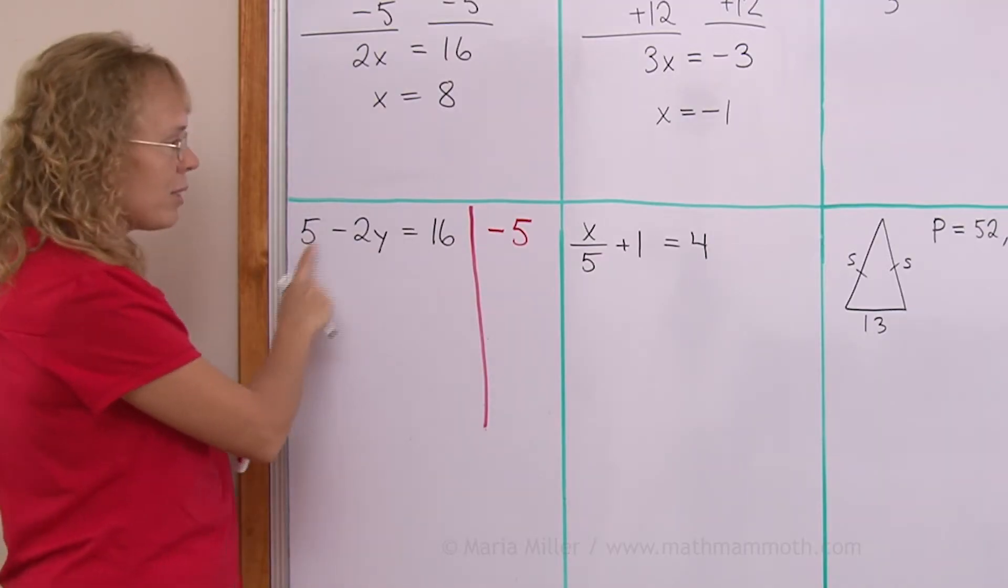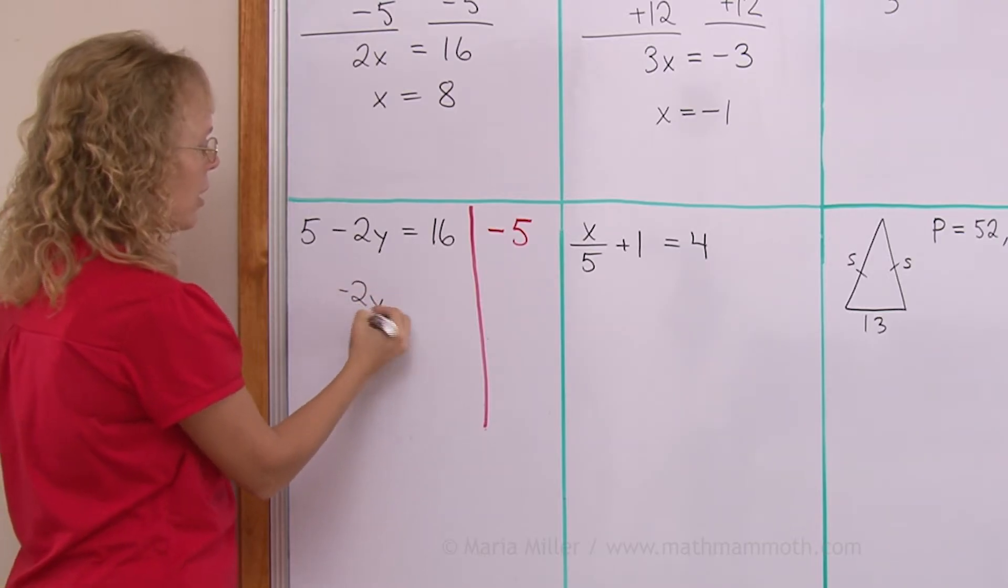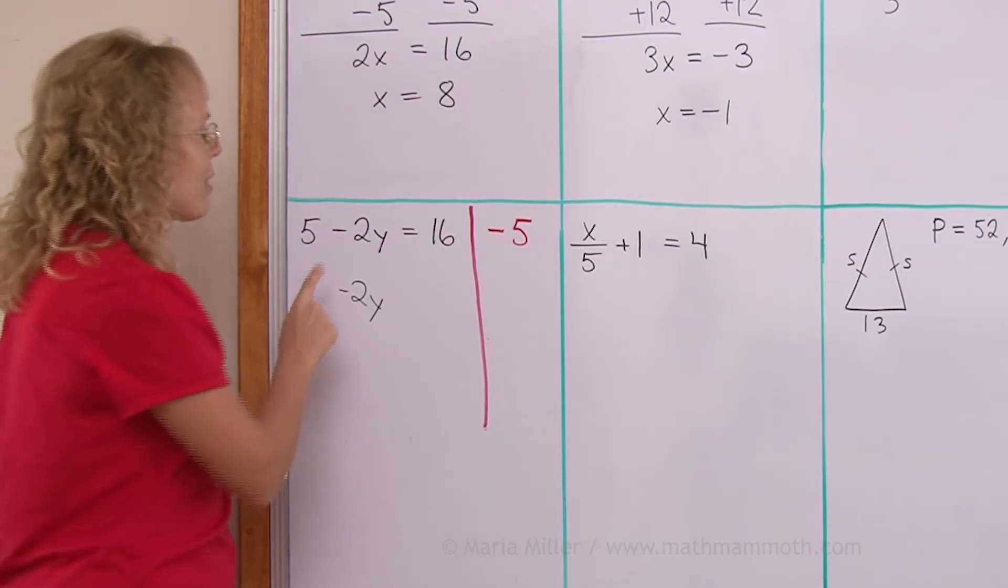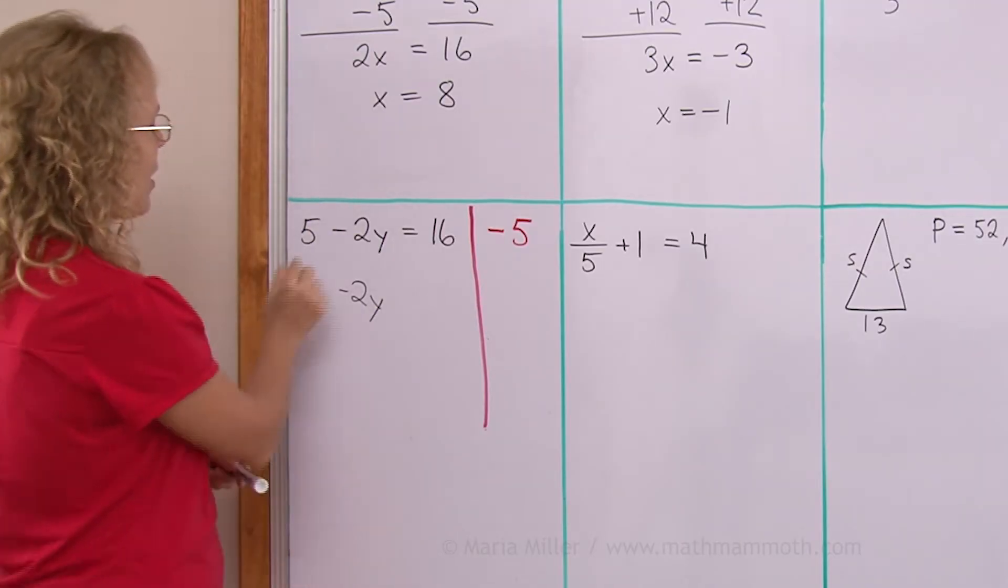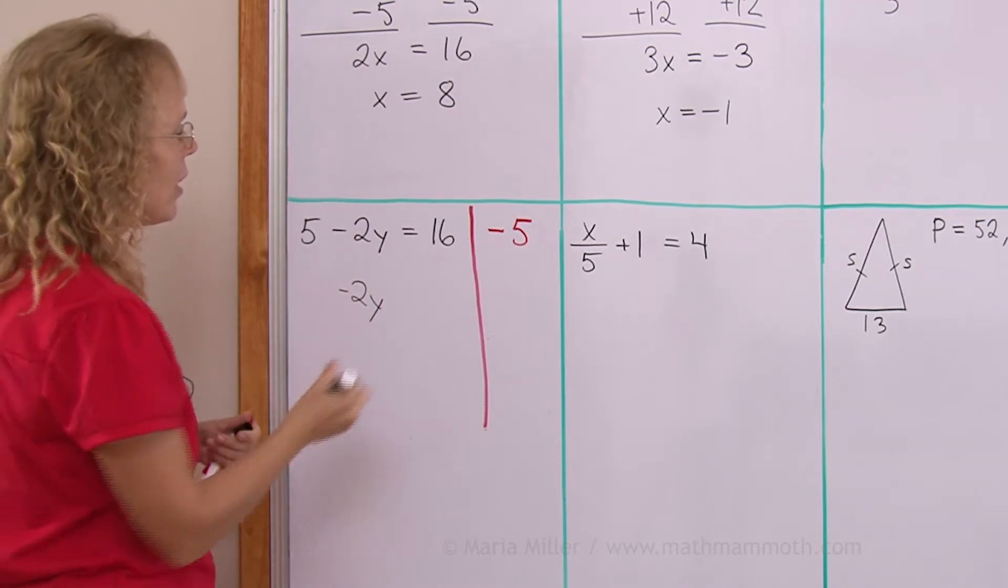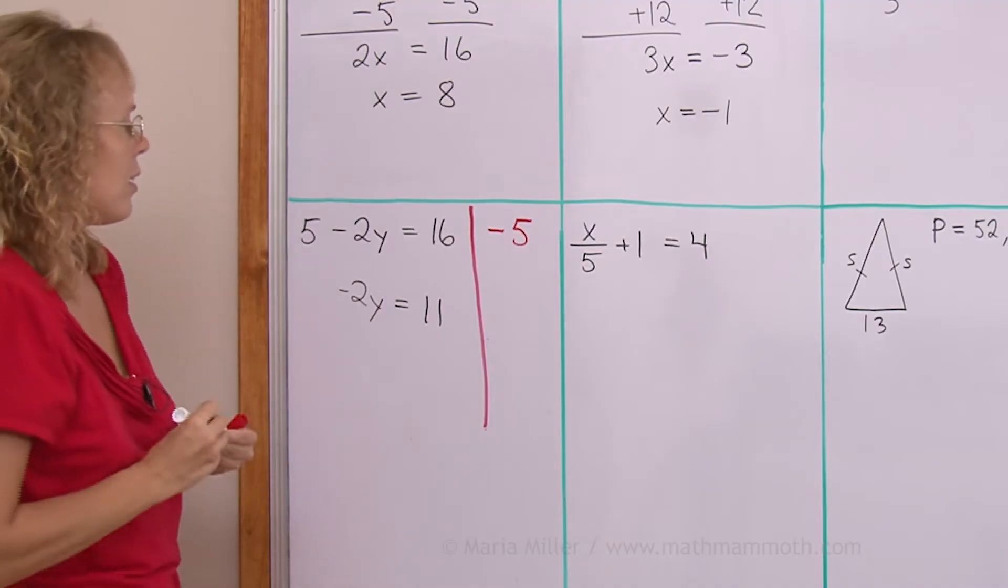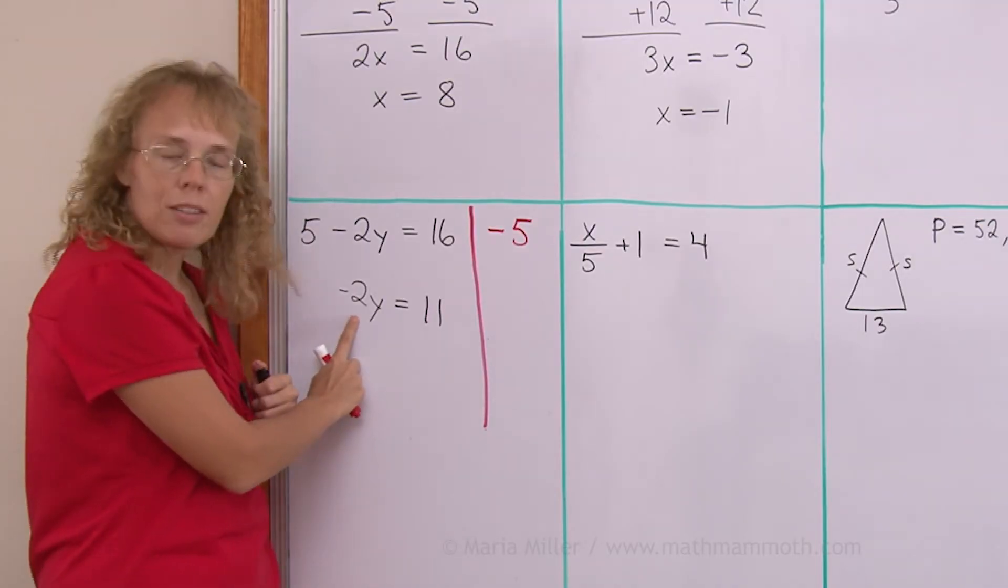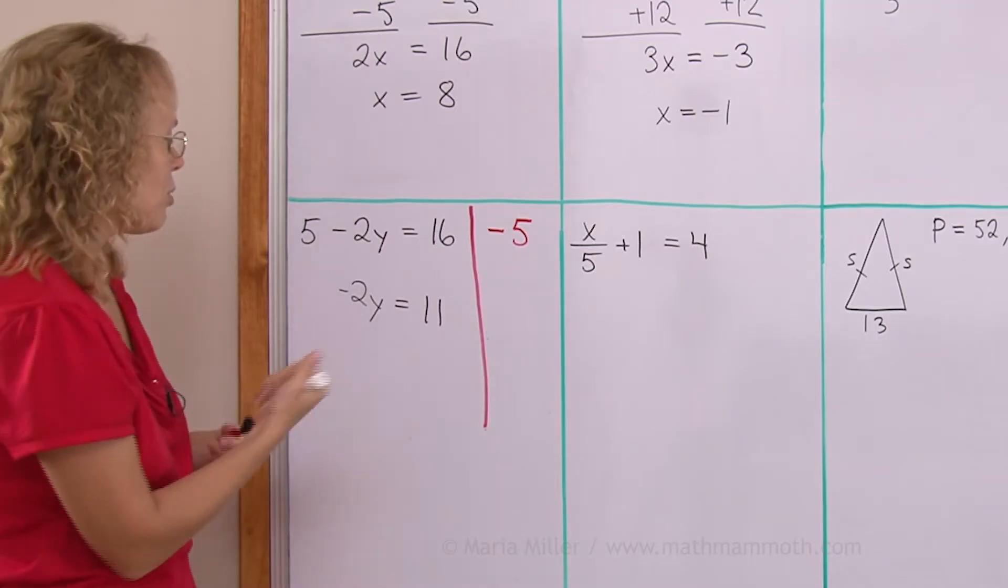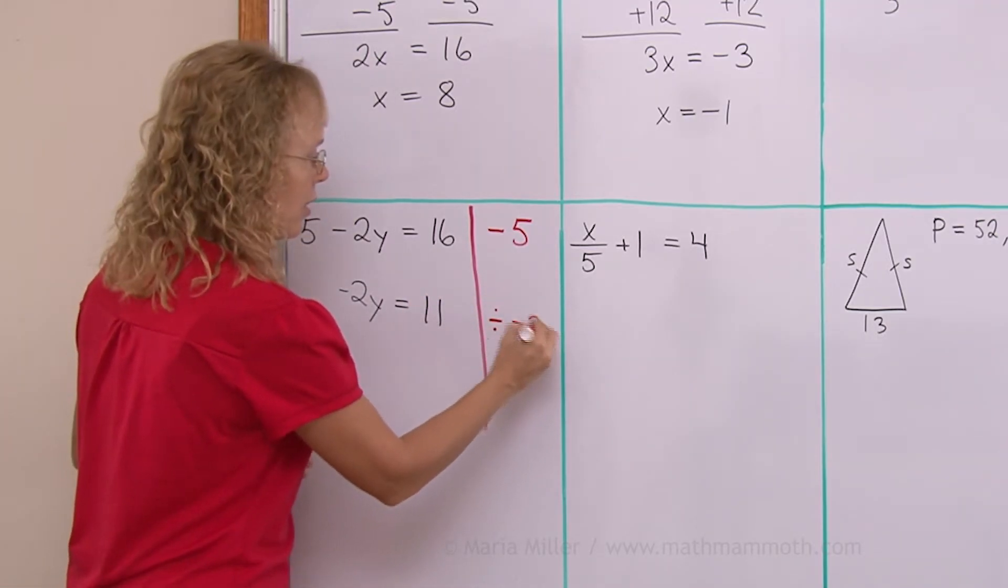So when this 5 minus 5 it leaves this alone negative 2y. Notice that we will not be left with 2y. We will be left with negative 2y. Then this 5 disappears. The negative sign does not disappear. And here 16 minus 5 leaves me 11. My next step here. Of course there's a multiplication by negative 2.